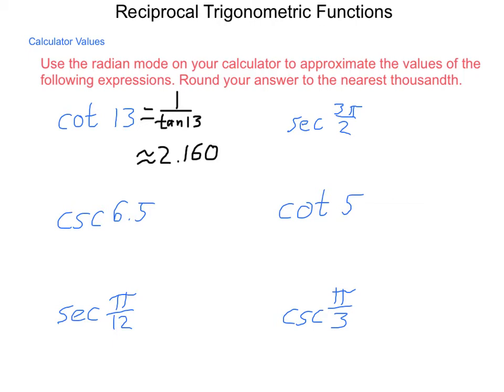Secant of 3π halves will be 1 over the cosine of 3π halves. And when we enter that into our calculator, we come out with an error. That is because at 3π halves, cosine is 0, so this is undefined. There would be an asymptote at that location if we're thinking about this graphically.